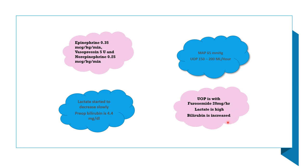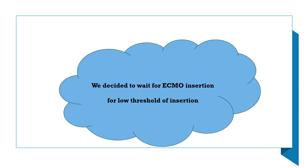Bilirubin was increasing. The surgeon noted lactate had started to decrease slowly — from 11 down to 10 — and preoperative bilirubin was 4.4. After discussion, we decided to wait on ECMO insertion, with a low threshold for insertion. The patient remained on high-dose inotropes and needed Lasix for urine output; if no improvement after four hours, we would proceed with ECMO.